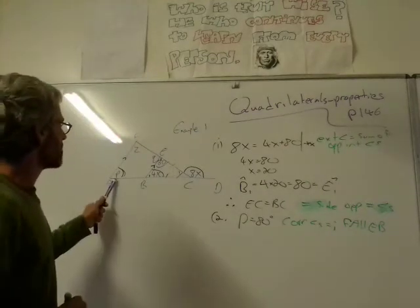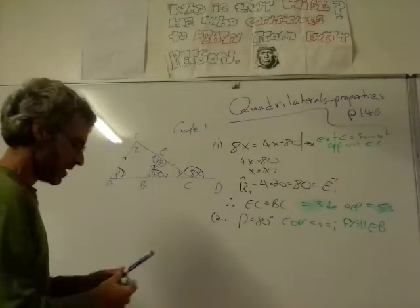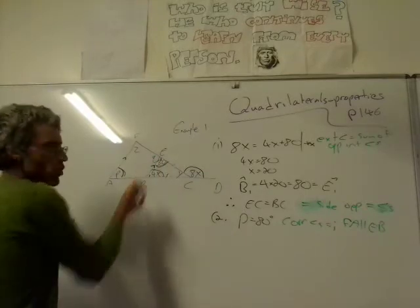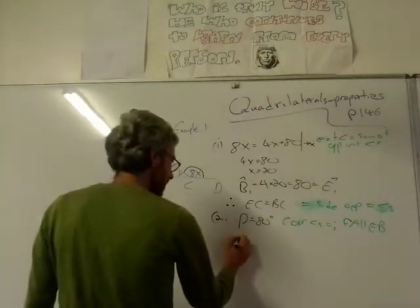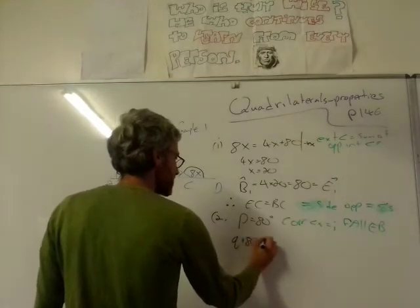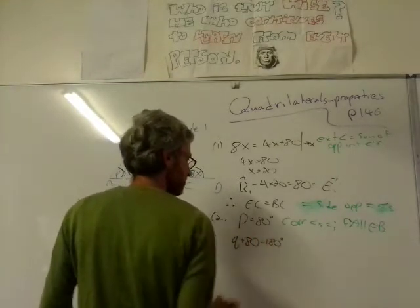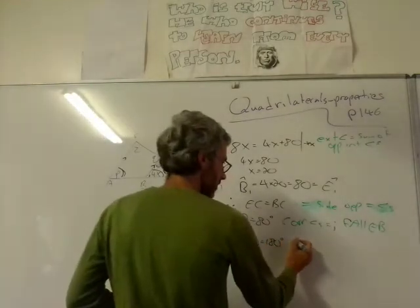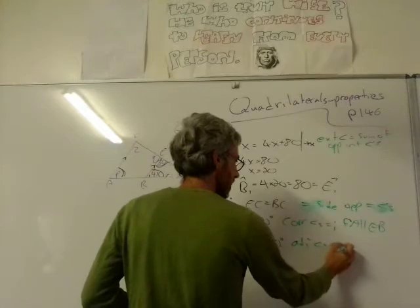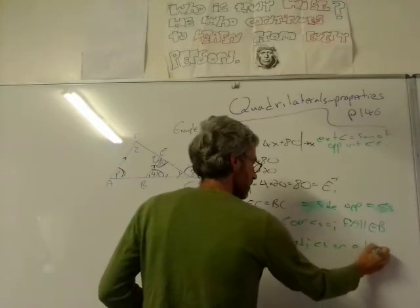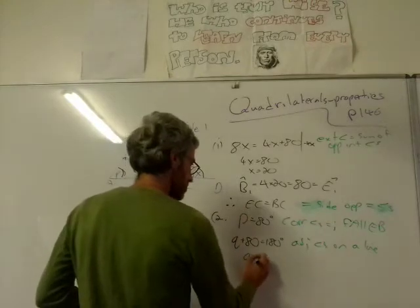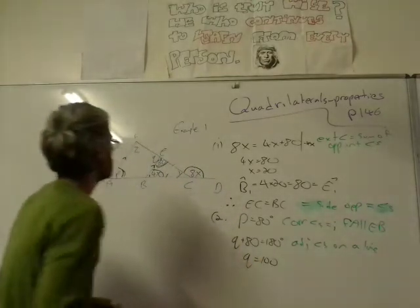Next one, after P, I guess it will be Q. Q is also pretty easy because we know this is 80, so Q must be 100. Why is that? Q plus 80 equals 180 degrees. What's the property here? Adjacent angles on a line. Therefore, Q equals 100.